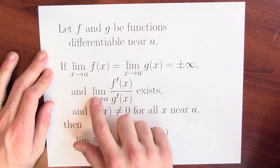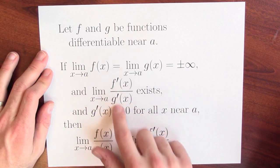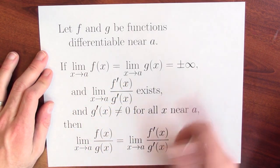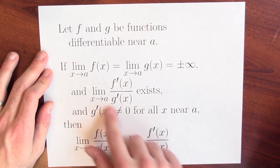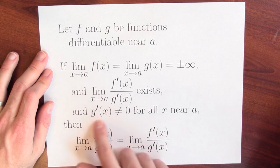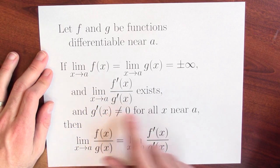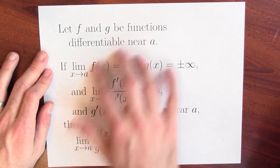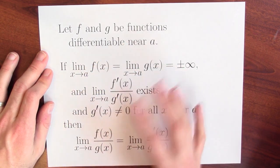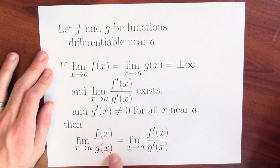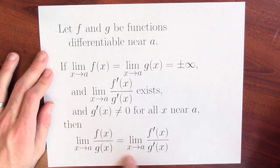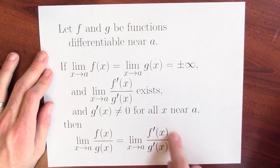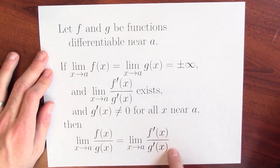You've still got all these other conditions. You've got to check that the limit of the ratio of the derivatives exists and that the derivative of the denominator is not 0 for values of x near a. But given these conditions, you then get the same fantastic conclusion that the limit of f over g is the limit of the derivative of f over the derivative of g.